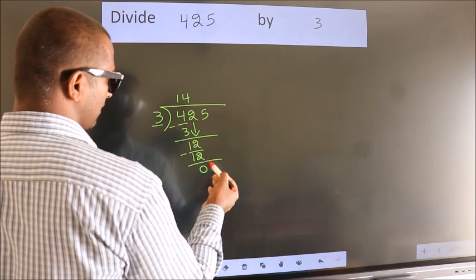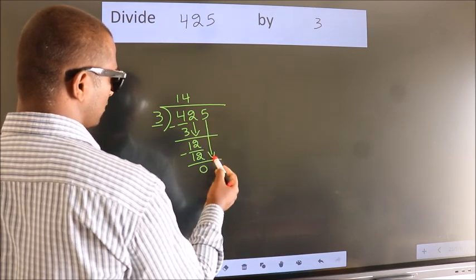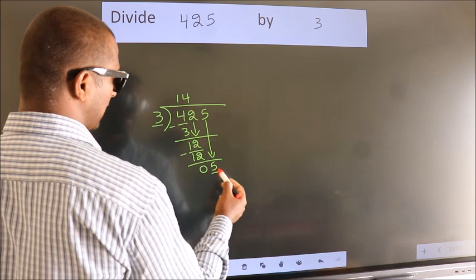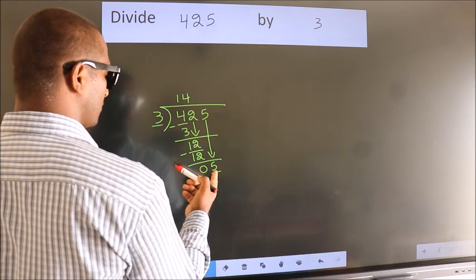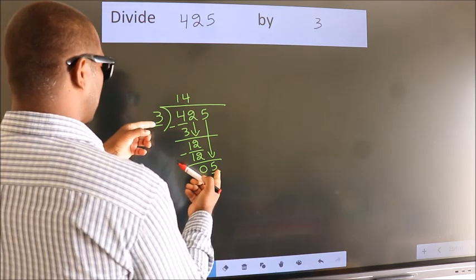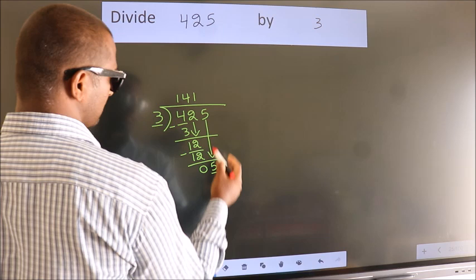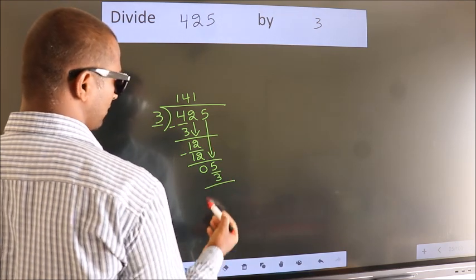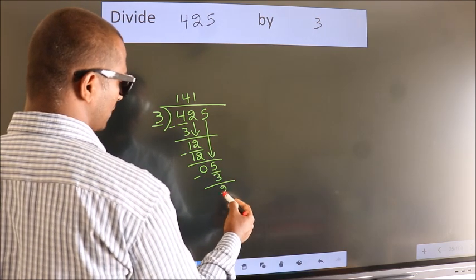After this, bring down the beside number. So 5 down. So 5. A number close to 5 in 3 table is 3 ones 3. Now we subtract. We get 2.